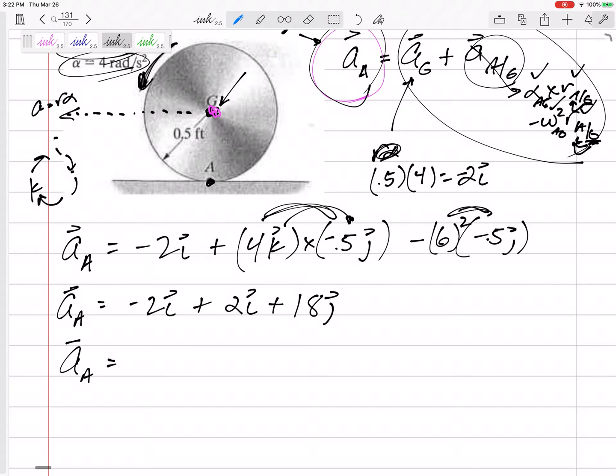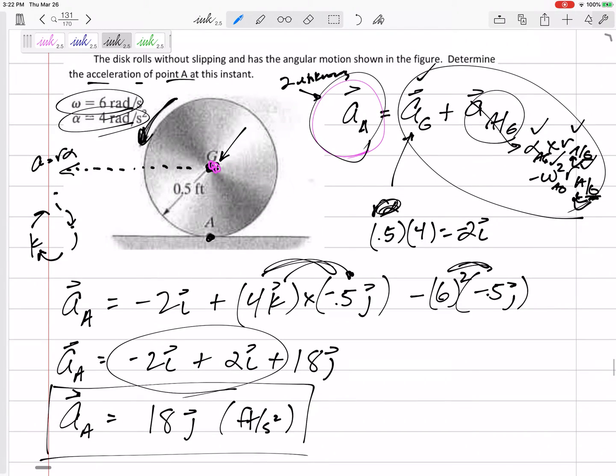All right, so the acceleration of A is, I can combine those and they add up to 0. And so my answer is 18 in the J. I need some units. This is acceleration. The acceleration is 18J. Let's talk about that. That's interesting. We have learned something new right here in this problem.